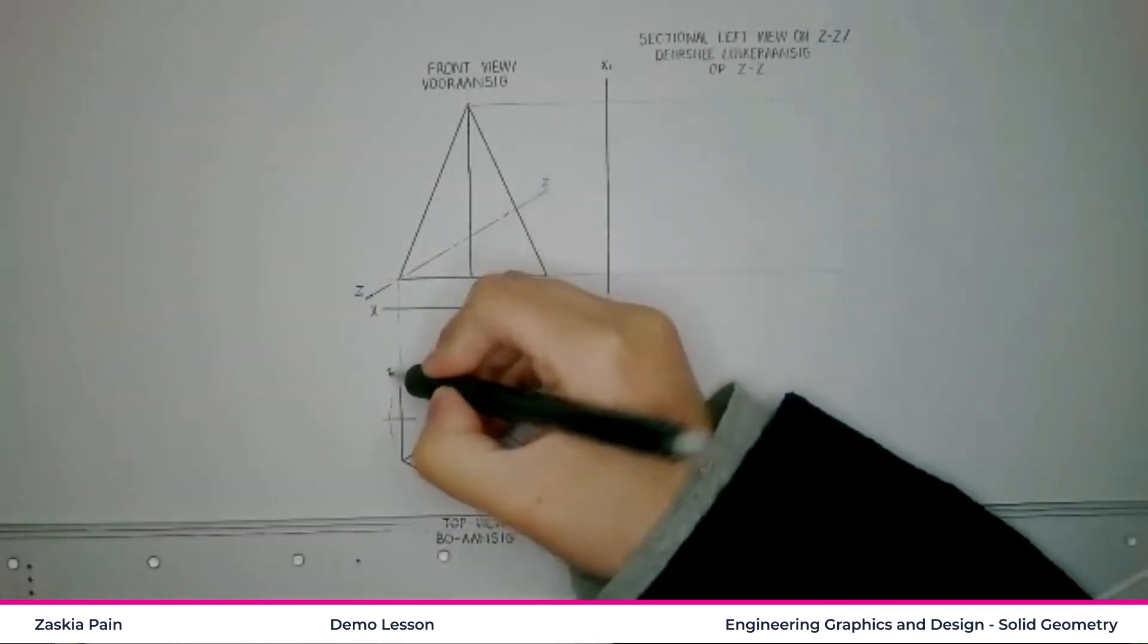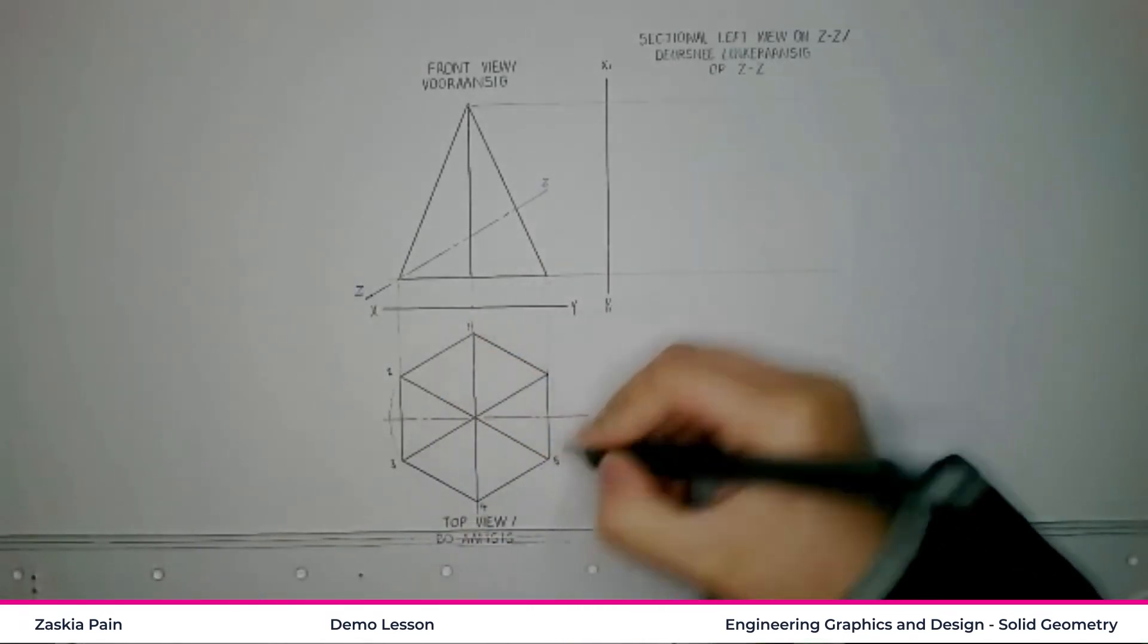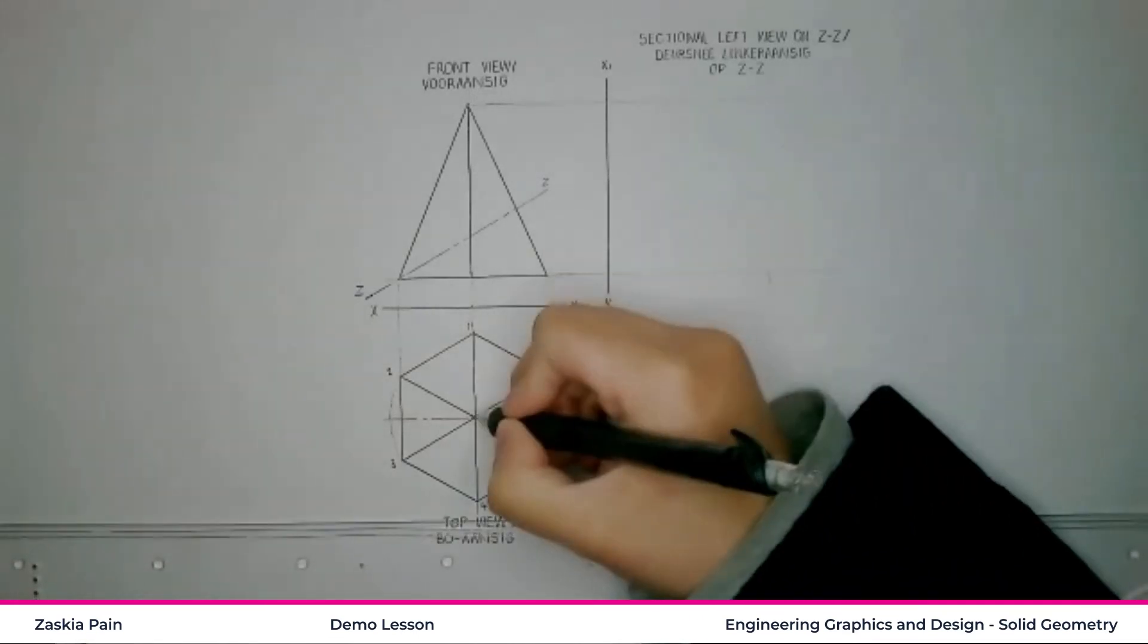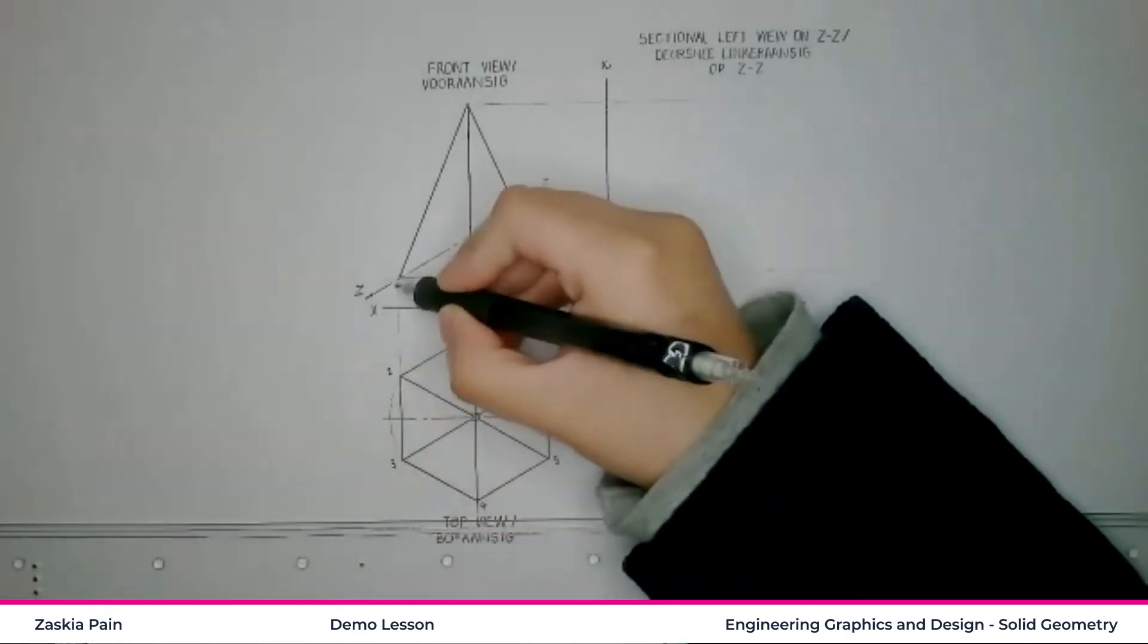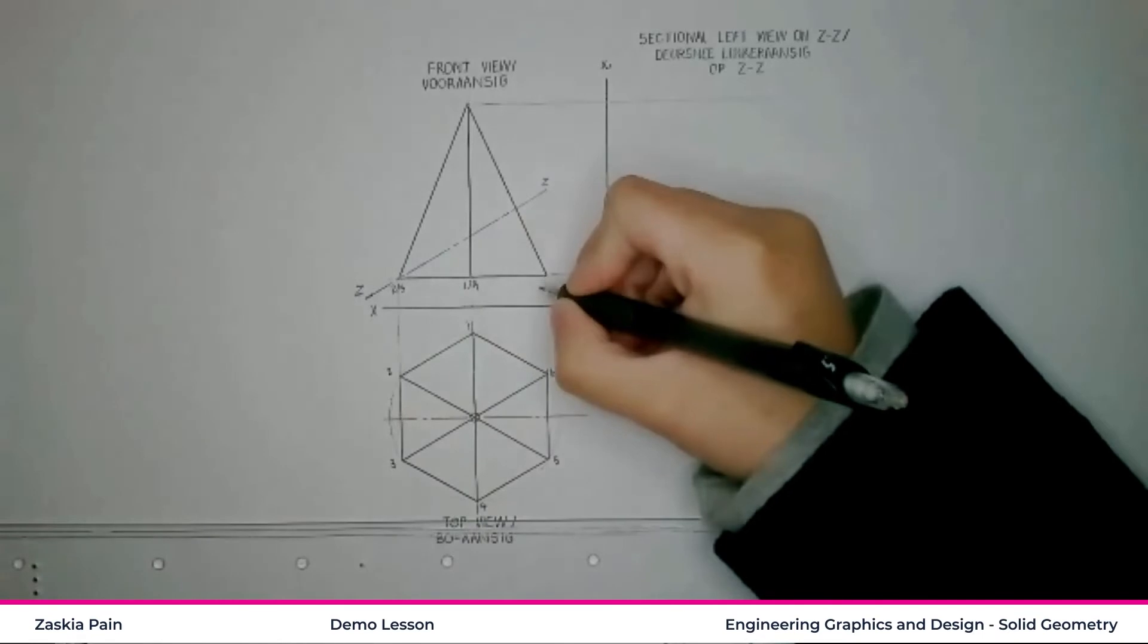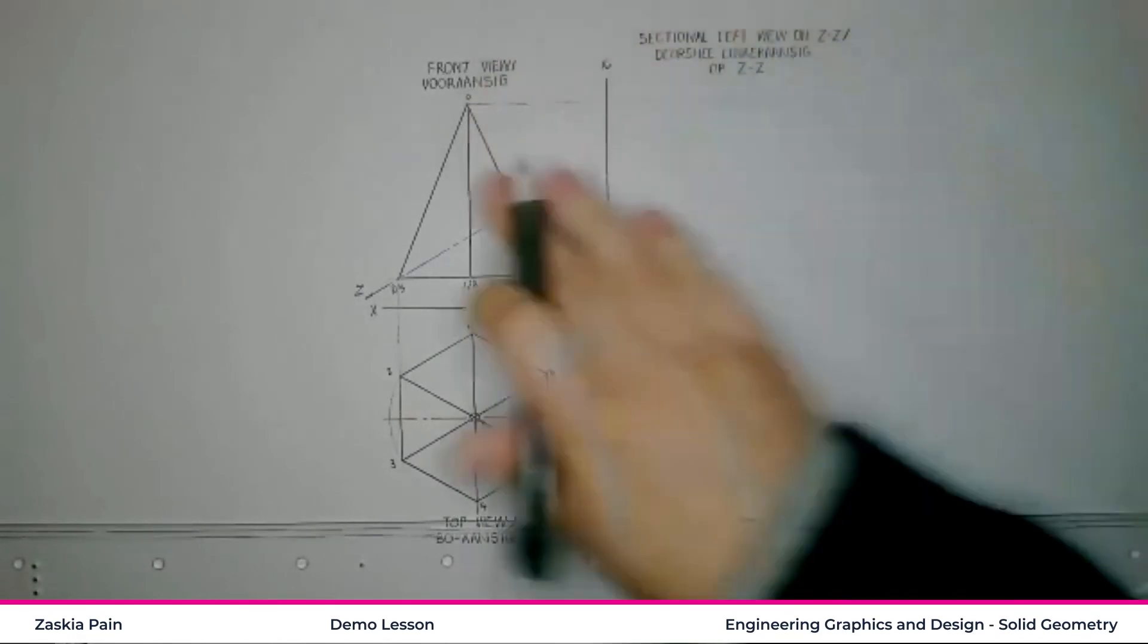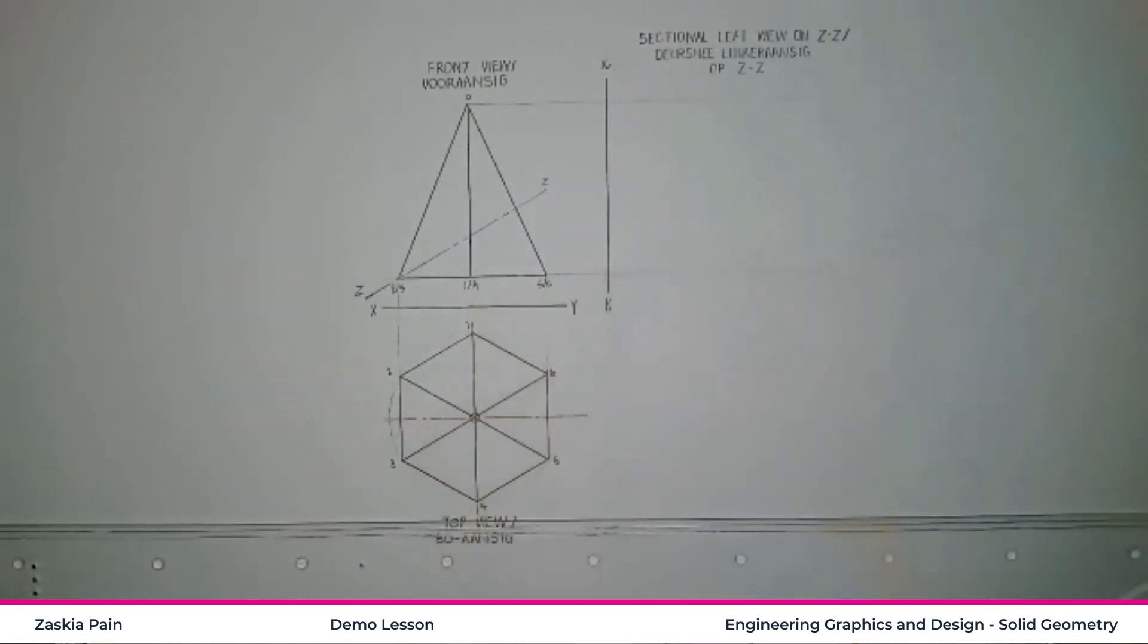So we need to number before I get too excited. We have to number. This is 1, 2, 3, 4, 5, and 6. And you can number any way you like. And because this is a pyramid, we have to call that O or T for top or A for apex. Here in line is number 2 and 3. Here we have number 1 and 4 in line. And here we have number 5 and 6 in line. And then, of course, our apex.